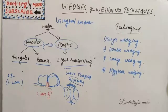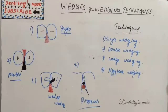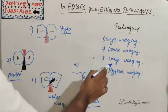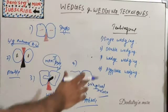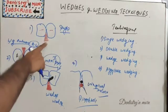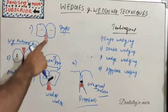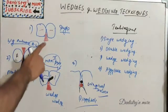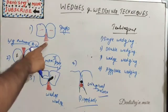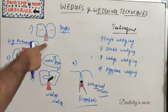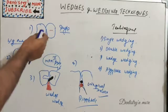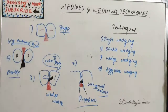Now let's learn about the various wedging techniques. There are four methods: single wedging, double wedging, wedge-wedging, and piggyback wedging. In single wedging, only one wedge is used. We place the pointed end from the lingual embrasure, as it is commonly wider than the buccal embrasure.